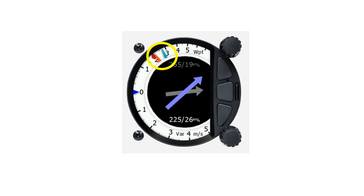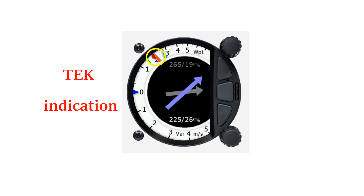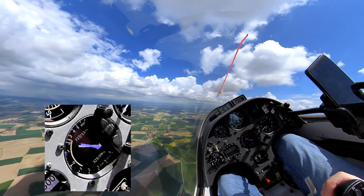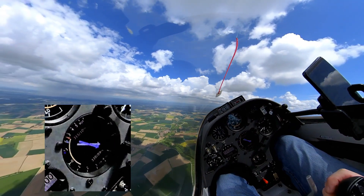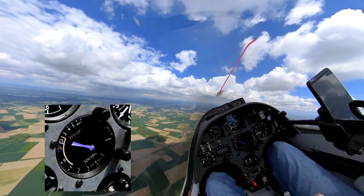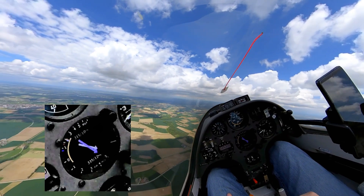You will see two variometer needles. The blue one shows the net indication of the HOG algorithm and the red one the conventional tech needle. The biggest advantage is that HOG delivers the wind direction and speed as well as sinking or rising air mass estimation in real time.